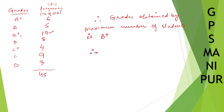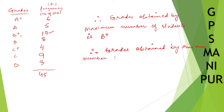The grade obtained by the minimum number of students — the minimum number is three — so D is the grade obtained by the minimum number of students.